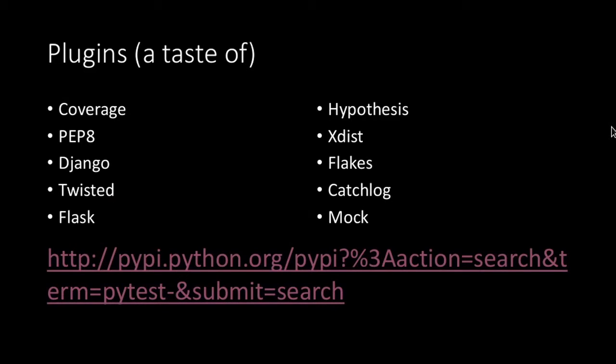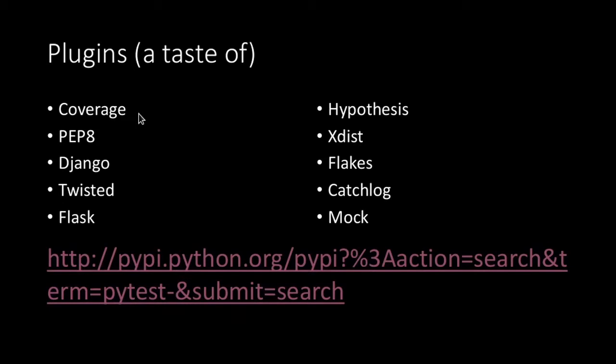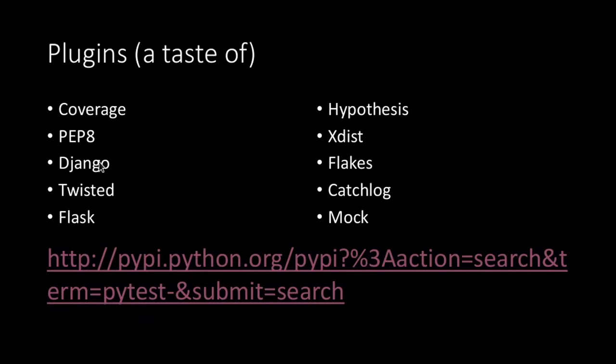Just a few words about plugins — because what I've shown you so far is very powerful, but it goes way beyond. The first plugin is coverage: '--cov', and once you add this plugin, you can check which part of your code was tested and which was not. PyTest can also test PEP8 compliance — you add a flag or use flake8, which is another type of static code analysis. So in addition to testing the code, you also test your conformance to various static analyzers, which sometimes find errors by static analysis.